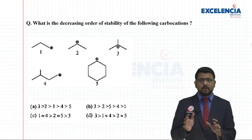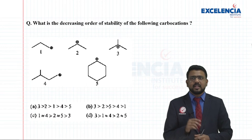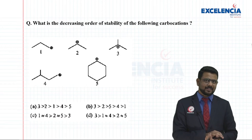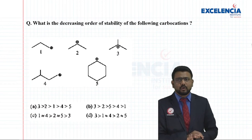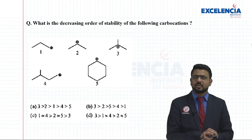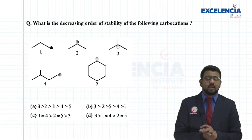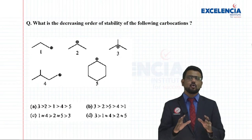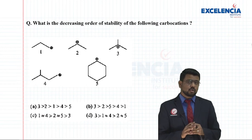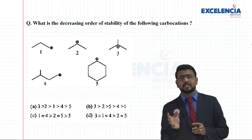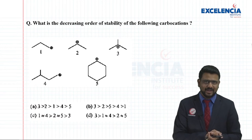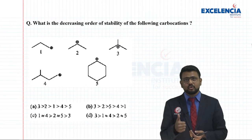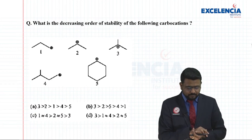The next question involves five different carbocations and asks for their decreasing order of stability. All structures have only single bonds - no pi electrons - so none will be stabilized by resonance. Resonance effect is ruled out from all these structures. We are left with hyperconjugation and inductive effect.